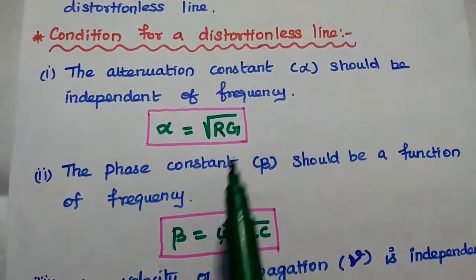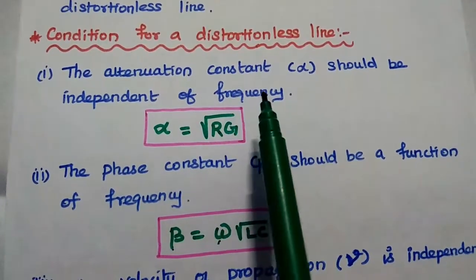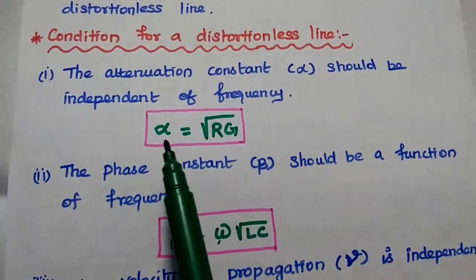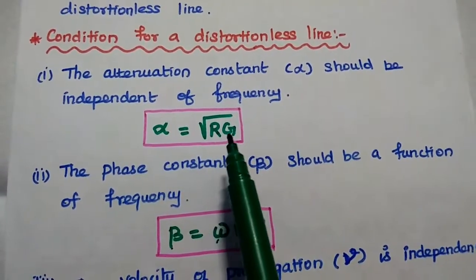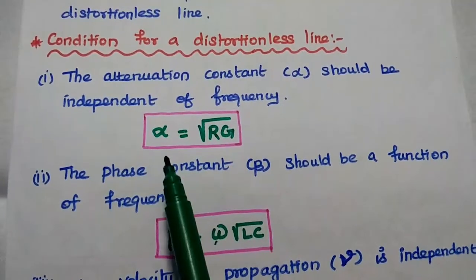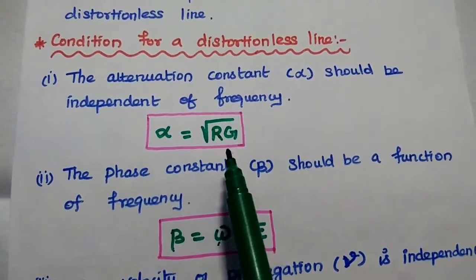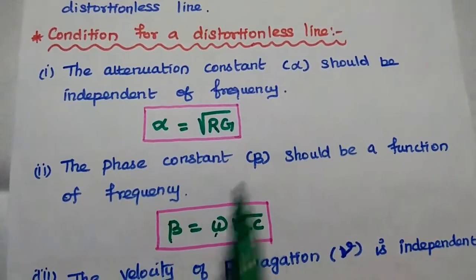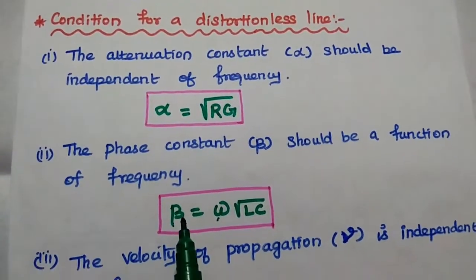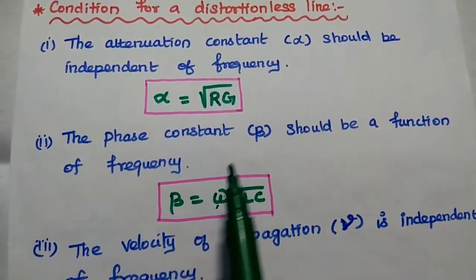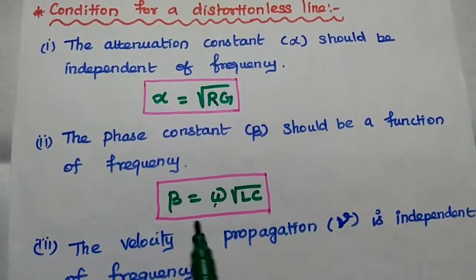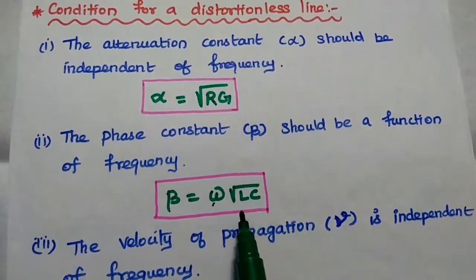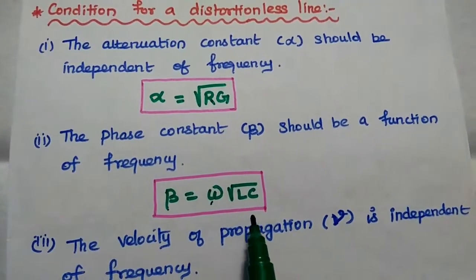The first condition is the attenuation constant alpha should be independent of frequency. Alpha is equal to square root of R into G, so it is independent of frequency — there is no frequency distortion. The second condition is the phase constant beta should be a function of frequency. Beta is equal to omega into square root of LC for the distortionless line.